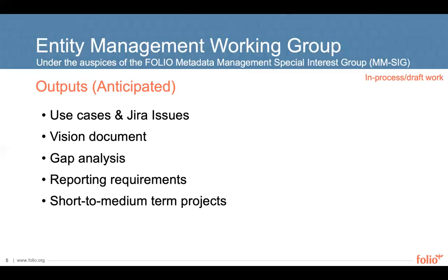The third output is a gap analysis that outlines components missing from FOLIO to meet the vision outlined in the aforementioned document. The fourth output is reporting requirements. Under the direction of the Reporting SIG and in collaboration with other SIGs, FOLIO is developing community-based reports that supplement ad hoc data reporting needs. The EMWG plans to identify reporting requirements explicit to the use cases developed as part of this work. Finally, we plan to identify several short- to medium-term projects that can act as steps towards accomplishing the outlined vision and/or proofs of concept to explore methods of reaching these goals. Thus far, we have addressed the first three; some work remains in draft as of July 1, 2020, but is anticipated to be published in a publicly accessible space by the end of the month. Work on outputs four and five is anticipated to begin in the fall.